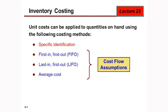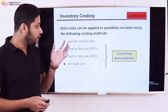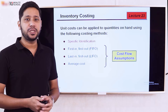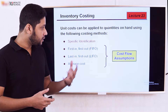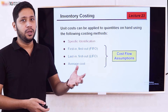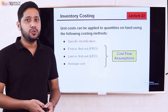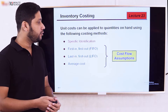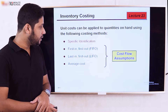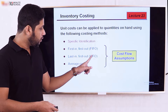So basically, inventory costing has different alternative tools. The popular ones are FIFO, LIFO, weighted average, and specific identification. Specific identification is used for luxurious goods — for example, when you buy a car. For luxurious goods, specific identification is used for inventory costing.